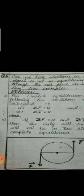The statement of question number six is: can we have situations in which an object is not in equilibrium even though the net force on it is zero? Give two examples. For complete equilibrium, two conditions must be satisfied. Condition one: the sum of all forces acting on a body equals zero — mathematically, sigma F = 0. Condition two: the sum of all torques acting on a body equals zero — mathematically, sigma τ = 0.